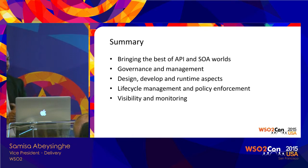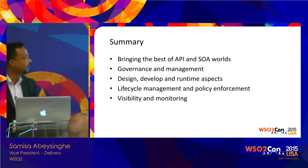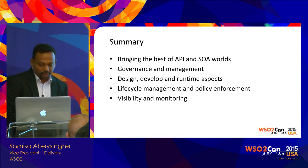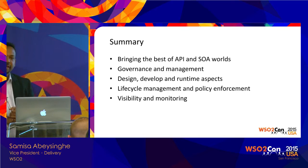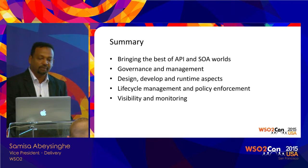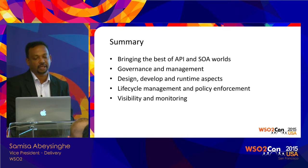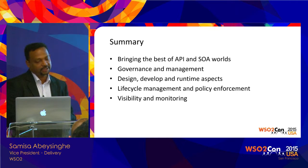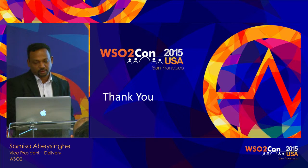To summarize, application services governance is about bringing the best practices of API management and service governance into one converged world. The three aspects of design time, development time, and runtime monitoring — lifecycle management and policy enforcement — are important in this space. Once you have the full system, keeping track of what is happening through visibility, dependency analysis, and monitoring is key.